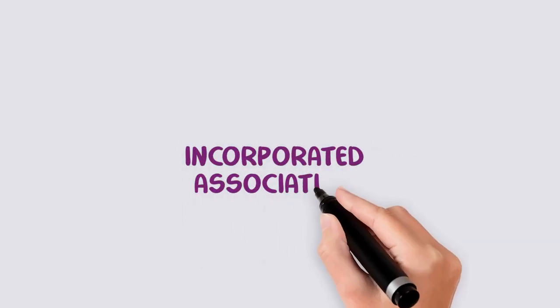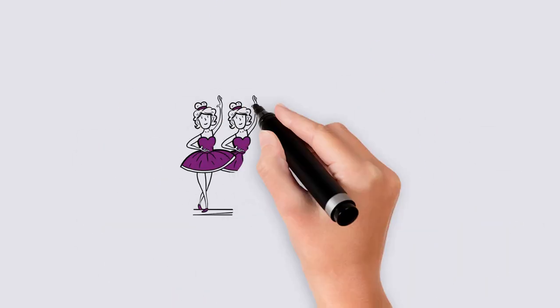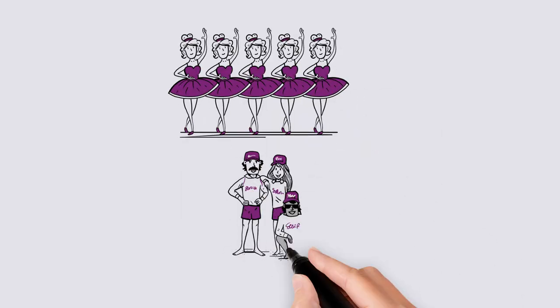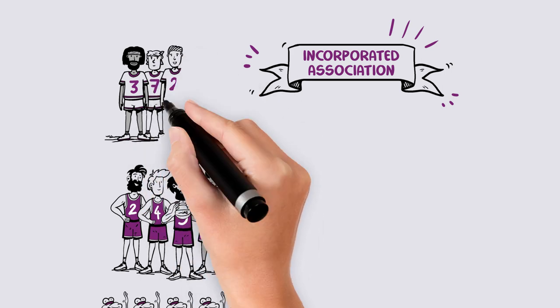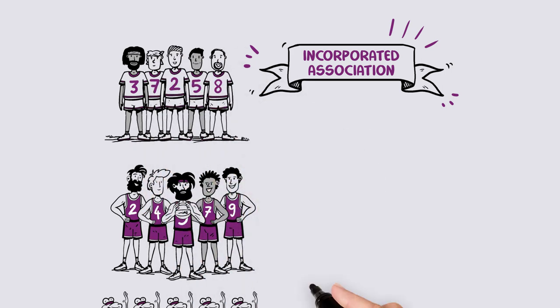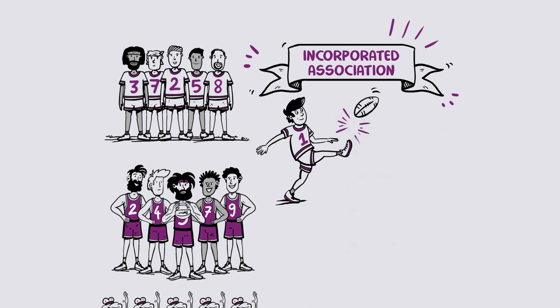An incorporated association is a group of five or more people who come together for a common purpose. It is intended to operate without any proceeds going directly to members, meaning the activities of this group are not-for-profit.